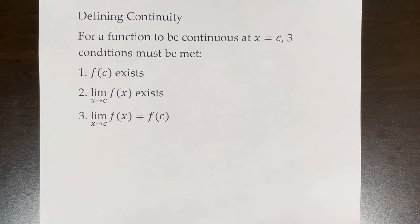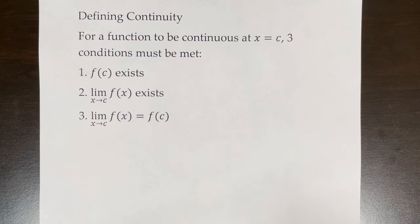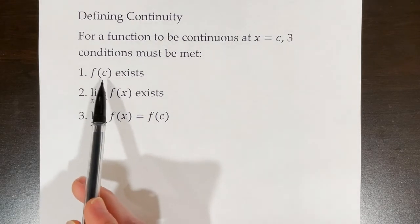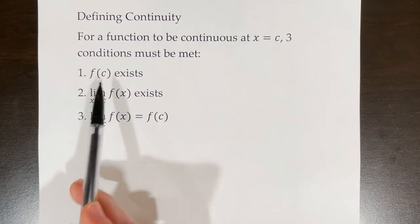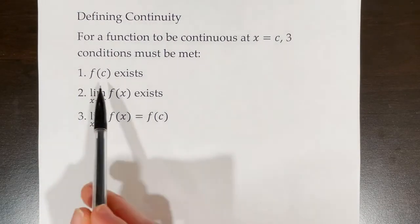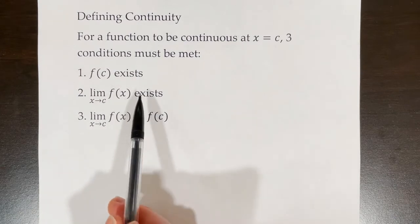For a function to be considered continuous at x equals c, three conditions must be met. The first condition is that f of c must exist. This is not involving a limit — this is just plugging c into function f. But that value must exist.